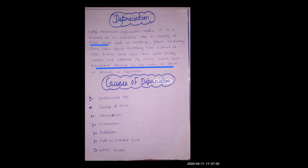Now let's talk about the auditor's duties regarding depreciation. First, the auditor must verify depreciation rates — checking which rates the company has applied. Second, the auditor must check the method of depreciation used, whether the company used the diminishing balance method or the straight-line method.